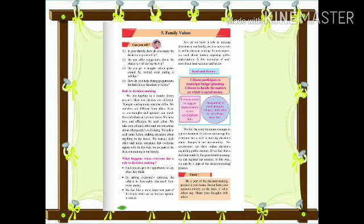We can take a decision if we have a society meeting, like organizing a party or a donation camp. All society members meet, read the newspaper, and citizens participate in municipal budget plans. Citizens decide the matters on which to spend money, such as improvements to city development plans, renovation of roads joining six villages, and joint efforts by villages. We feel the need for minor changes in our environment. It is to our advantage that everyone has a role in making decisions about changes in our surroundings.